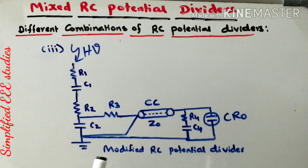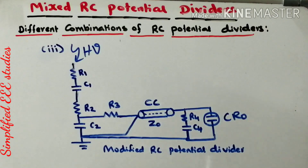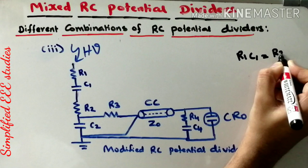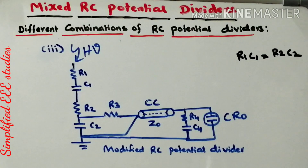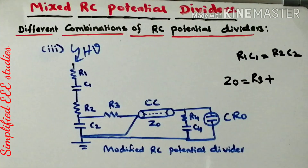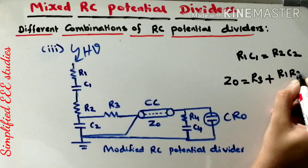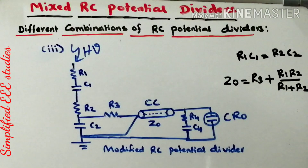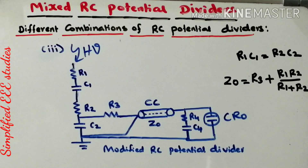The third combination is known as the Modified RC Potential Divider. It again improves the step response and is a modification of the RC series type potential divider. It obeys the relation R1·C1 equal to R2·C2. The surge or characteristic impedance can be calculated as: Z0 equals R3 plus (R1·R2 divided by R1 plus R2). This helps predict the characteristic impedance of the coaxial cable.